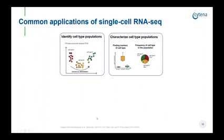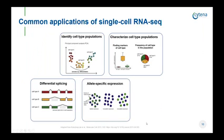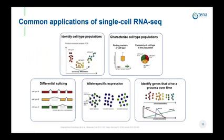Common applications of single cell RNA sequencing include the identification and characterization of cell types within heterogeneous samples or tissues. Using full-length transcript sequencing, we can also look at differential splicing in single cells and allele-specific expression, and investigate processes that are time- or cell cycle-dependent. These methods have already contributed tremendously to a better understanding in developmental biology, oncology, and immunology, and are now being picked up by the pharmaceutical industry as an additional tool for developing new therapies and drugs.